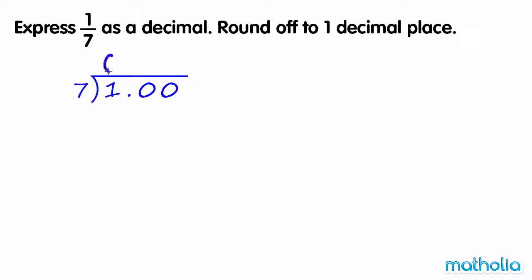One divide seven equals zero. Ten tenths divide seven equals one tenth. Ten tenths subtract seven tenths equals three tenths. Bring down the hundredths.